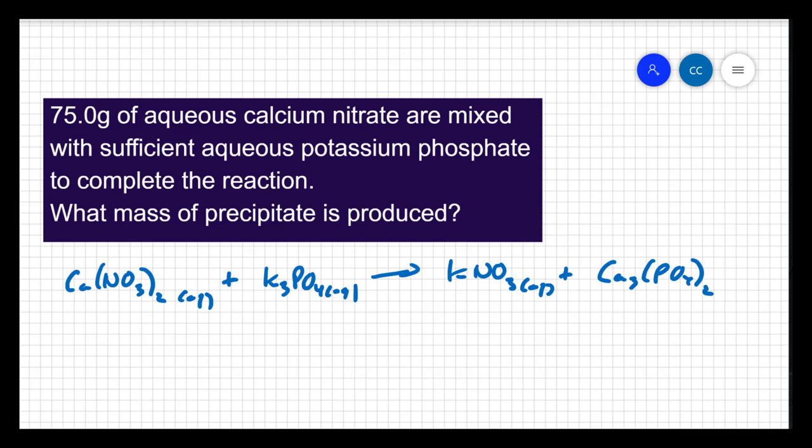Now phosphates are mostly insoluble. There are some exceptions, but calcium is not one. So this is the precipitate.